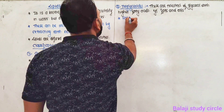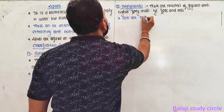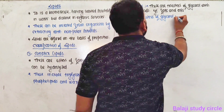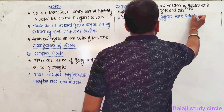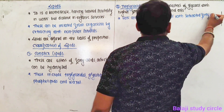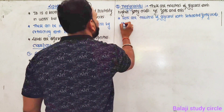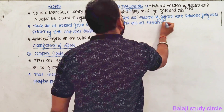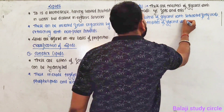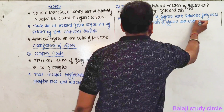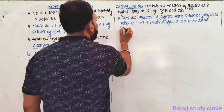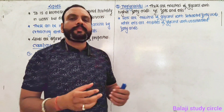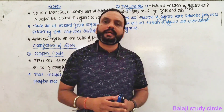Fats are the triesters of glycerol with saturated fatty acids, while oils are the triesters of glycerol with unsaturated fatty acids. An example of fat is glycerol tristearate, and an example of oil is glycerol trioleate.